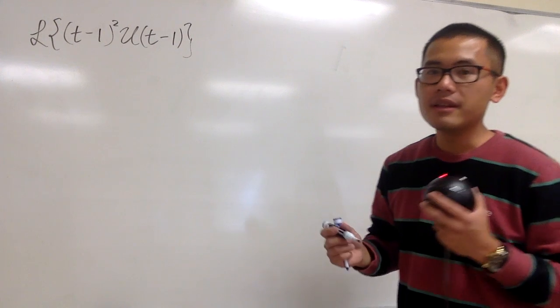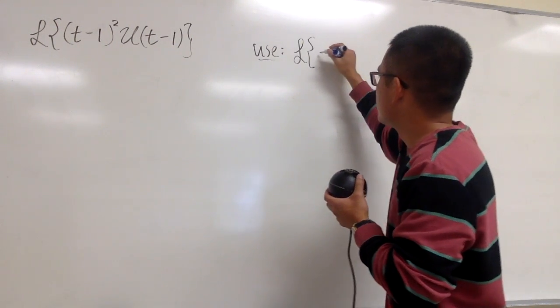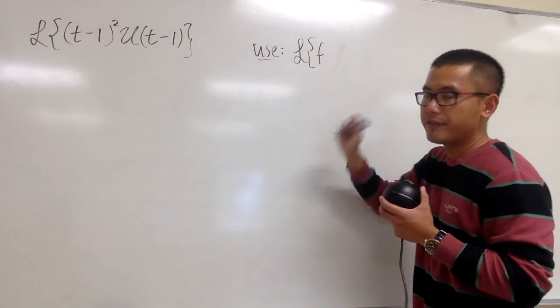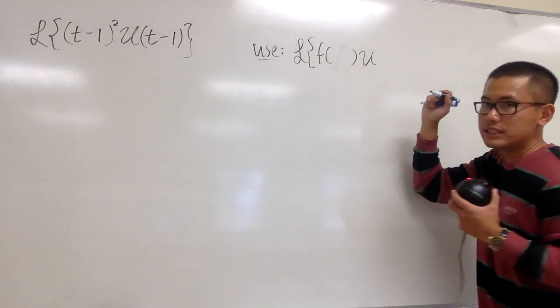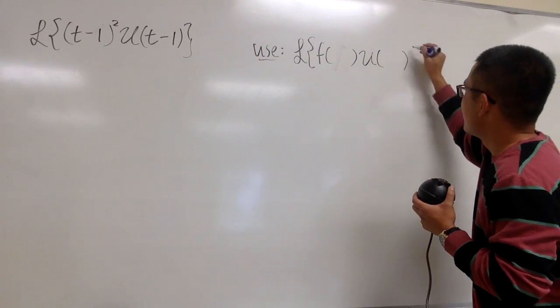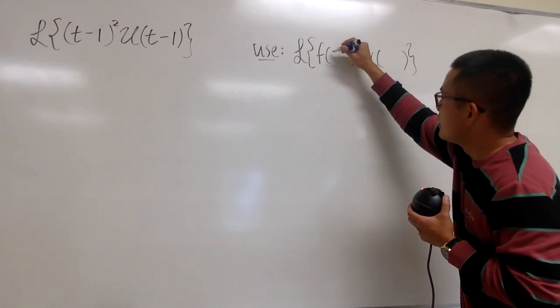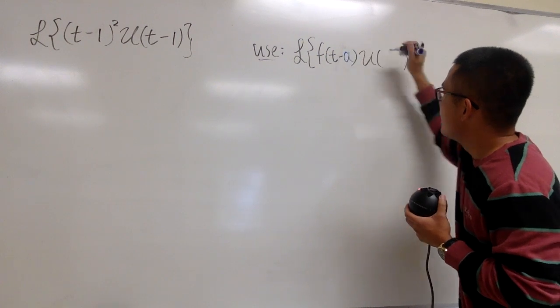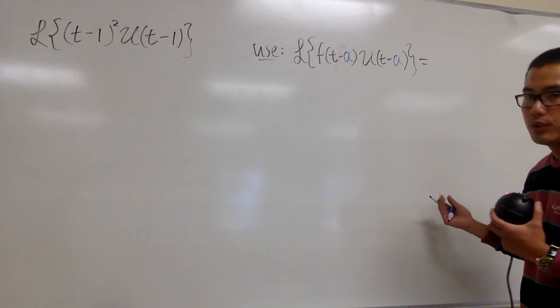This is a theorem statement that we're going to use. Let me write it down right here for you guys. So whenever we are doing the Laplace transform of a function, and we call it to be f of some input, and then we multiply by u, which is the unit step function, of something right here as well, if the inputs match, and we write it as t-a, and this right here will also be t-a, if this is the case, this is what we'll do.